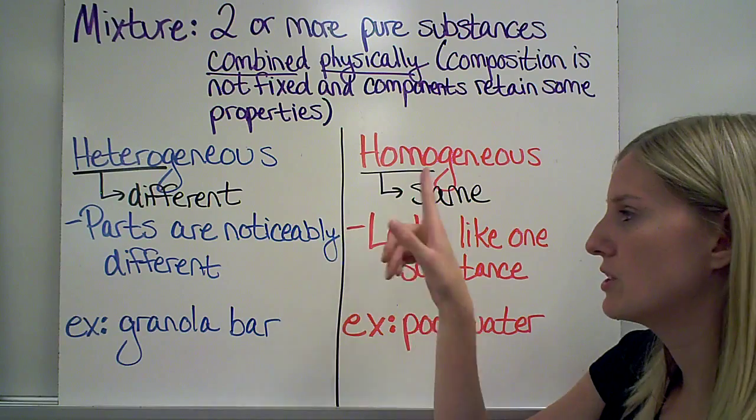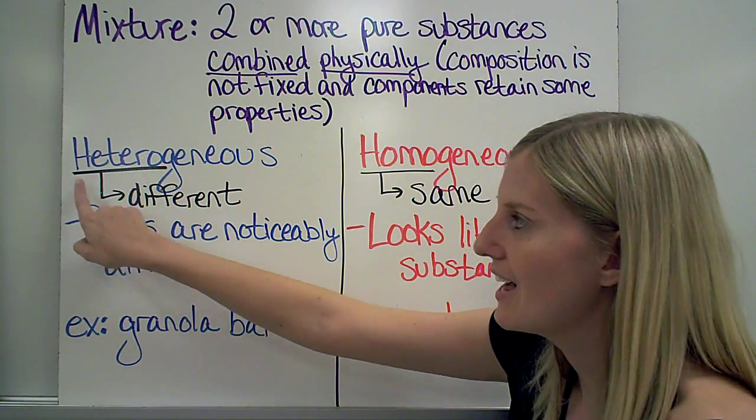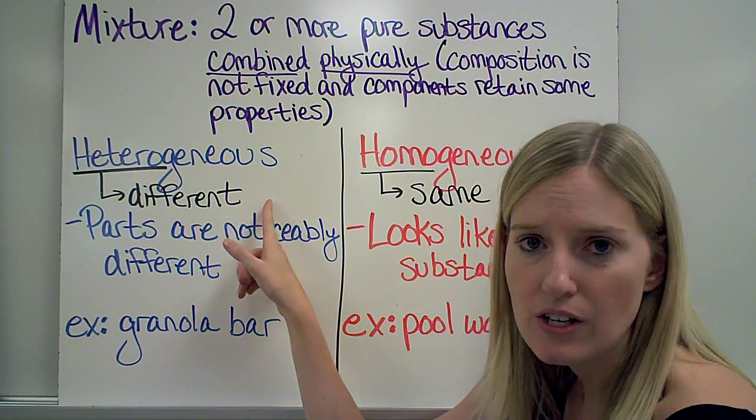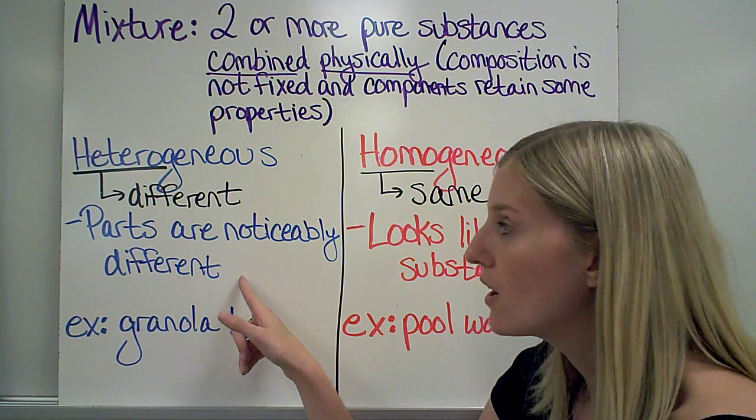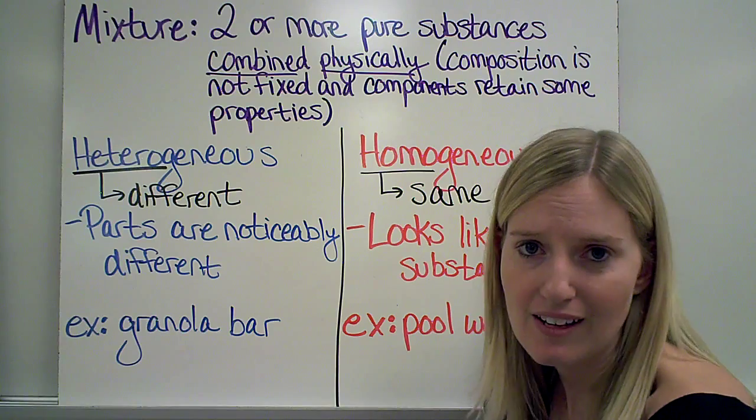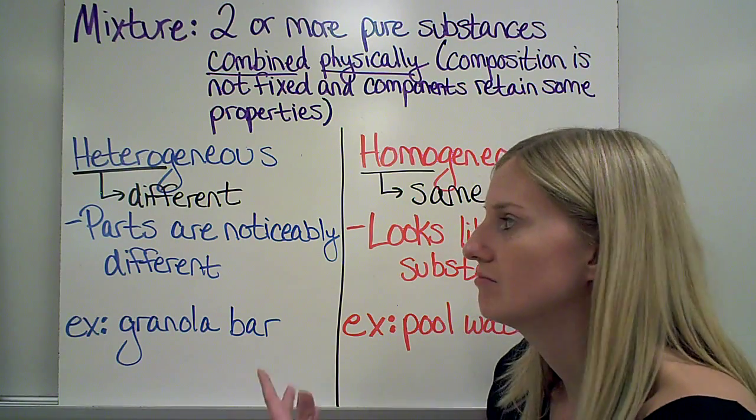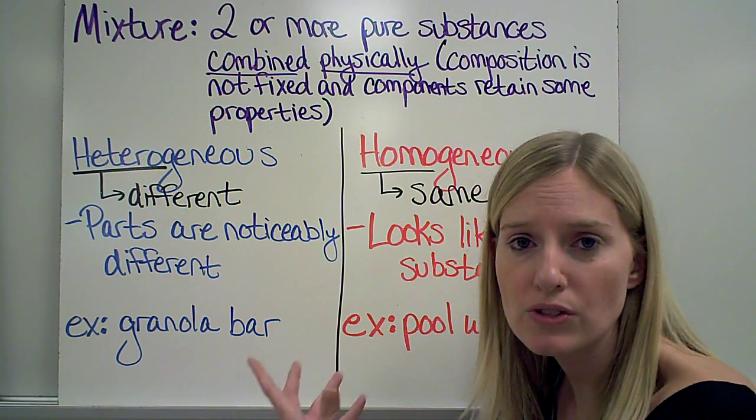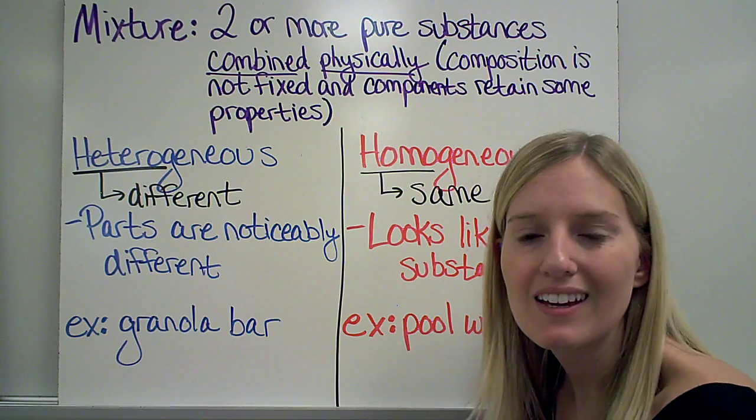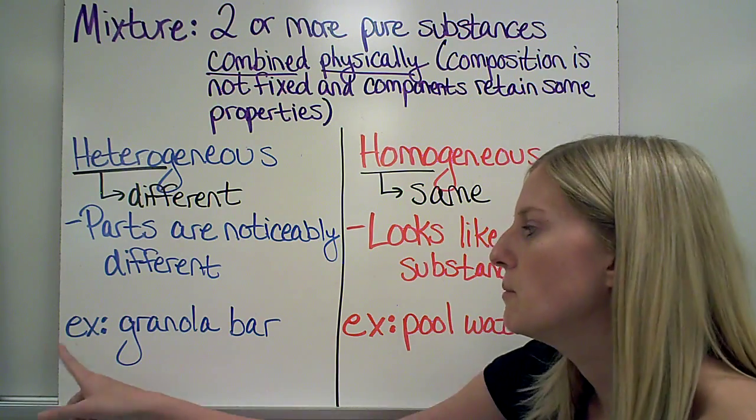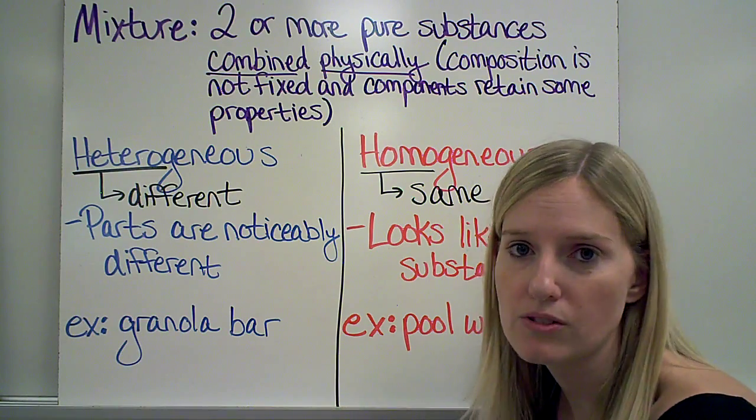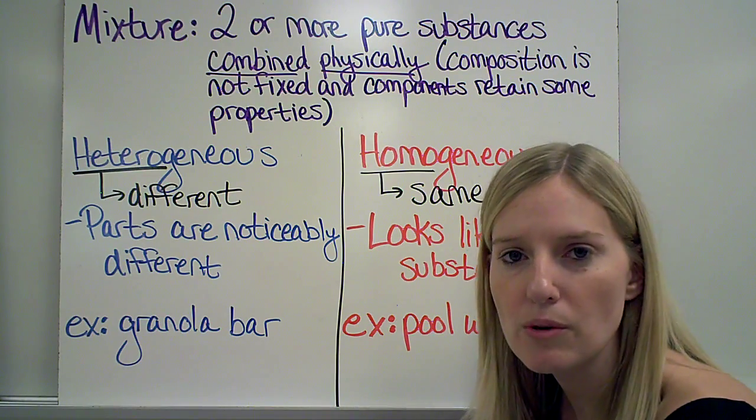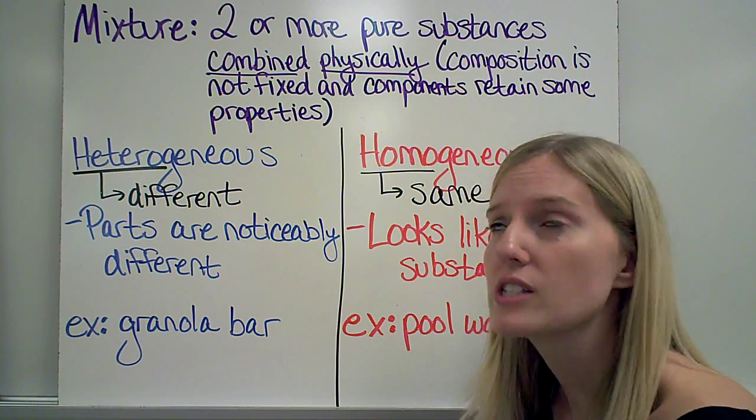We have two types of mixtures. We have heterogeneous mixtures and homogeneous mixtures. The prefix hetero means different. So when I have a heterogeneous mixture, that means that the parts are noticeably different. I can tell that there's more than one ingredient in that mixture. So an example of that is like a granola bar. So you see the peanuts. You see the chocolate chips. You see the peanut butter. Whatever sort of granola bar you have, you can see all of the individual parts.